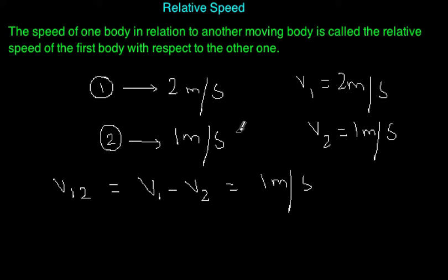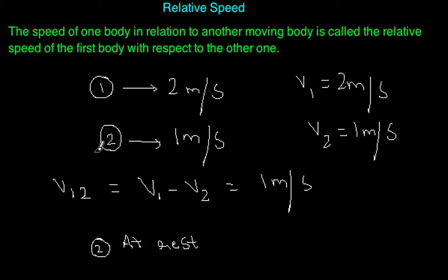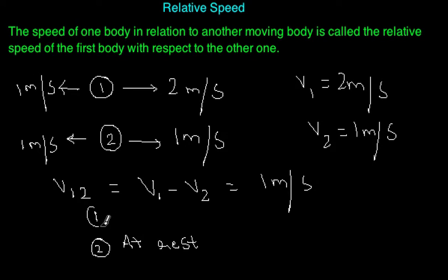We can also visualize this by keeping ball 2 at rest. If ball 2 is at rest, we subtract 1 meter per second from all other objects. So the speed of ball 1 becomes 2 minus 1, which is 1 meter per second. This is how we compute the relative speed when the two objects are moving in the same direction.